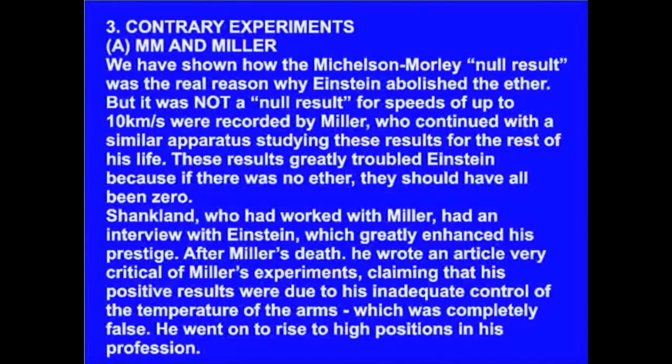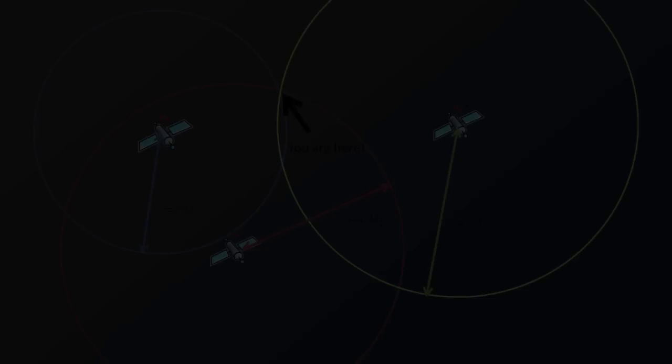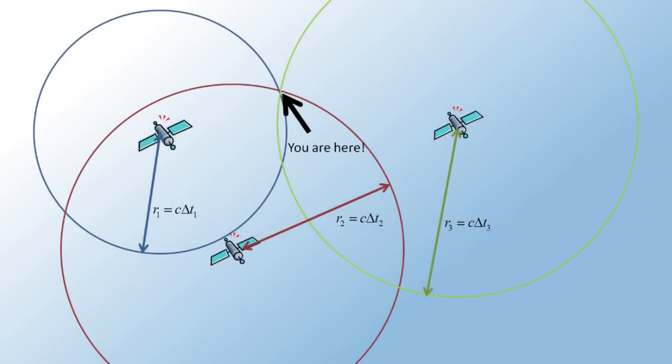We have shown how the Michelson-Morley null result was the real reason why Einstein abolished the ether. But it was not a null result, for speeds of up to 10 kilometers per second were recorded by Miller, who continued with a similar apparatus, studying these results for the rest of his life. Look, Michelson-Morley experiments are being run continuously today, with far more sensitive equipment, and there has been no sign of the ether. Also, every time we use a GPS device, we use technology that wouldn't work if the speed of light were different in different directions. Sorry, but the ether simply doesn't exist.